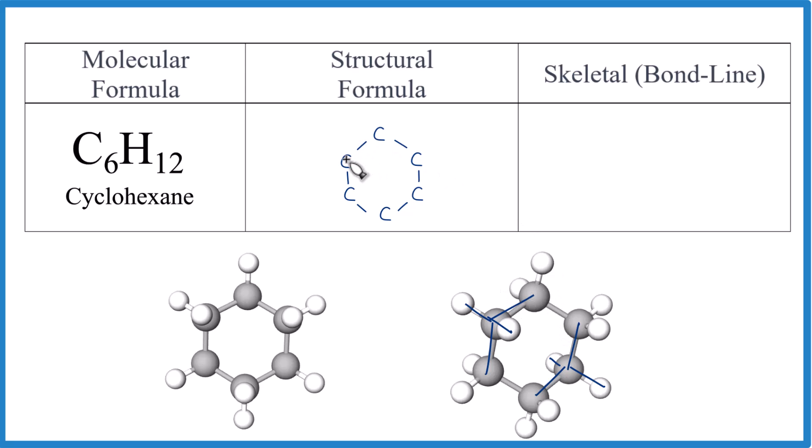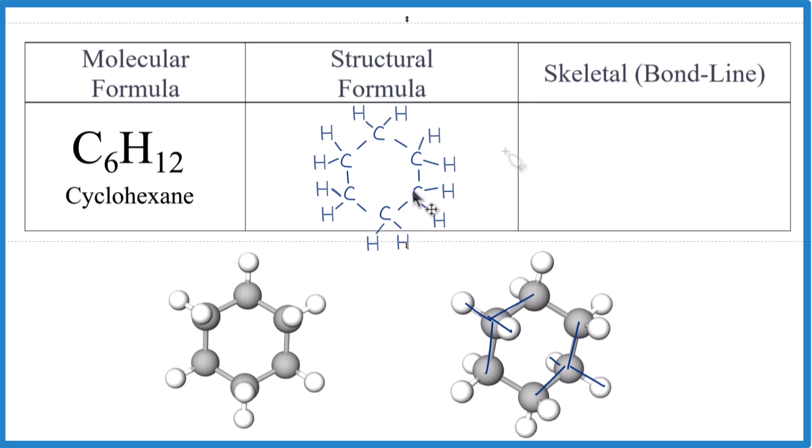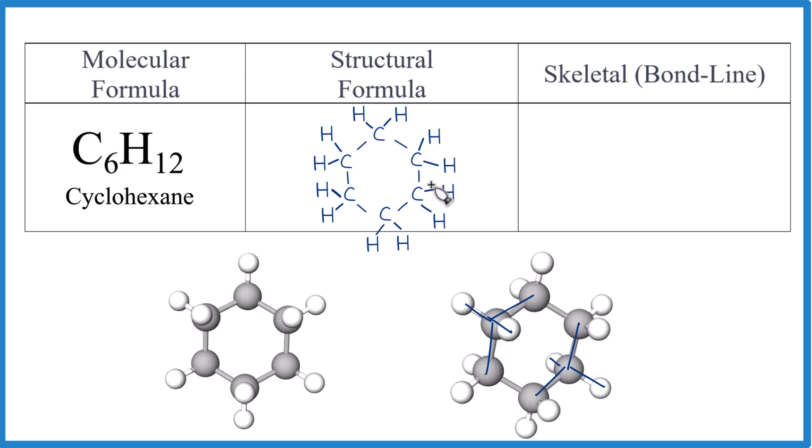So that means each one of these carbons has one, two. We need to put two bonds and those are where the hydrogens go. Like this. It's a little bit crowded, but you can see we have our carbons, six of them. And if you count the hydrogens up, there'll be 12.